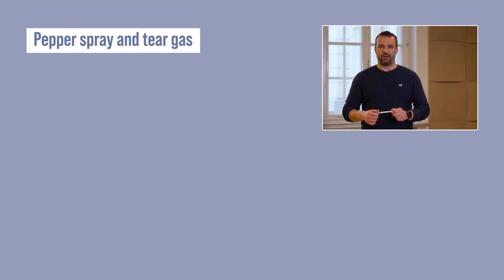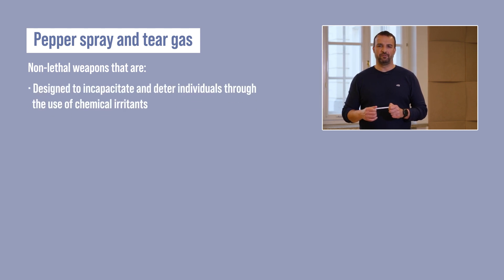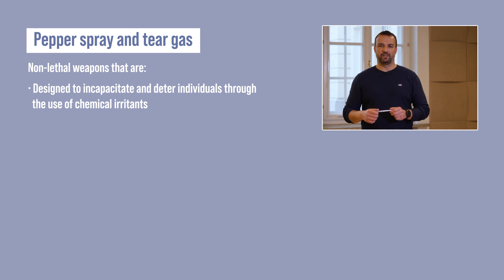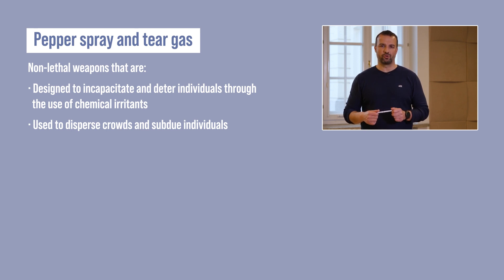Finally, let's talk about the use of pepper spray and tear gas during assemblies. These chemical agents have become increasingly prevalent in law enforcement riot control and self-defense scenarios. Tear gas and pepper spray are non-lethal weapons designed to incapacitate and deter individuals through the use of chemical irritants. The first thing to remember is that exposure to these chemicals is not the worst thing that could happen to you — if you are careful, you should recover with little problem. Tear gas and pepper spray are chemical compounds used by law enforcement to disperse crowds; they are irritants mixed with solvents and delivered through propellants.